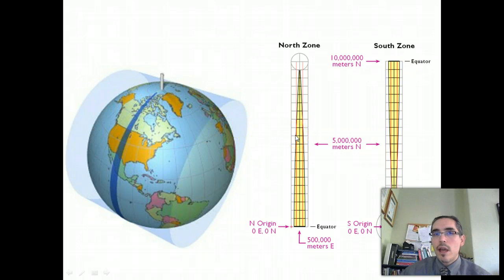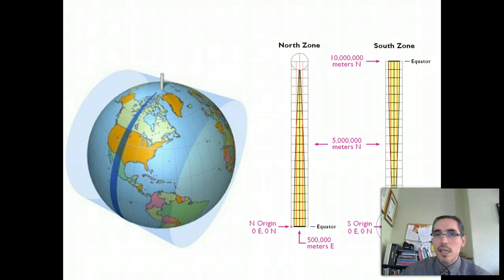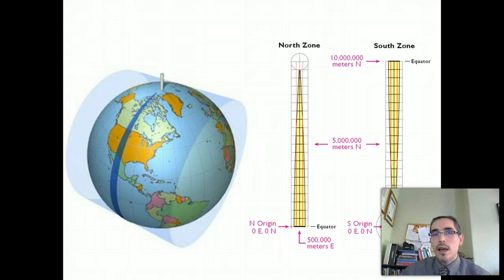Within a zone, we describe locations in terms of their distance from a reference point, as we do in every coordinate system. It's much more similar to a traditional Cartesian coordinate system, because we're essentially describing positions in terms of their X and Y position — X being the east-west position, and Y being the north-south position. Here, we call them eastings and northings. We use the easting first, the X position, in terms of how far east a position is from our origin, and then how far north.